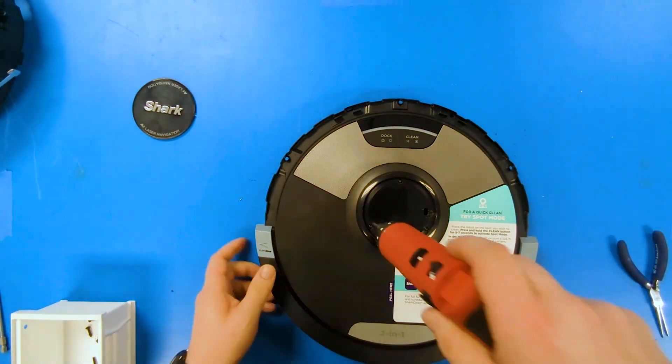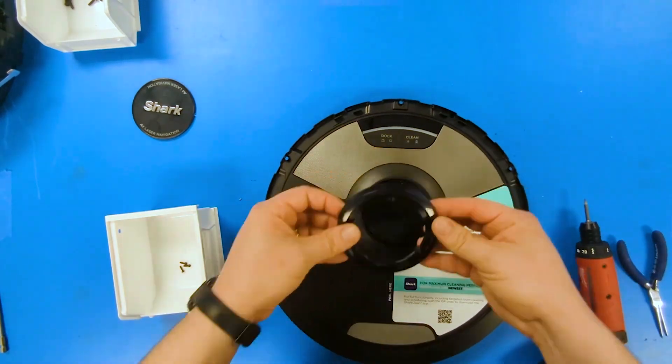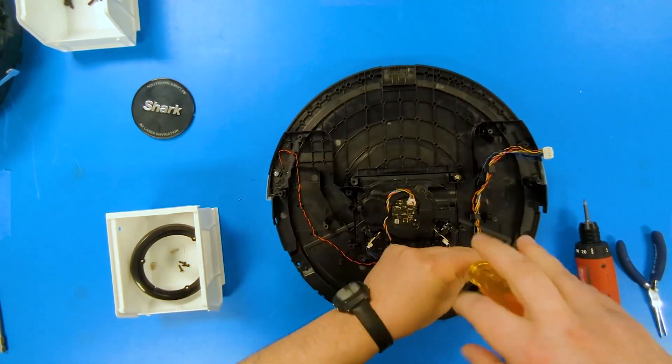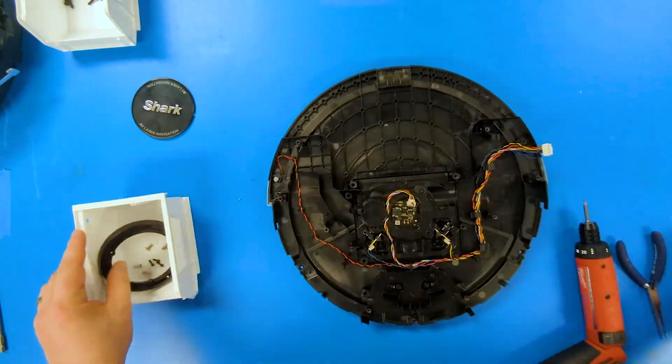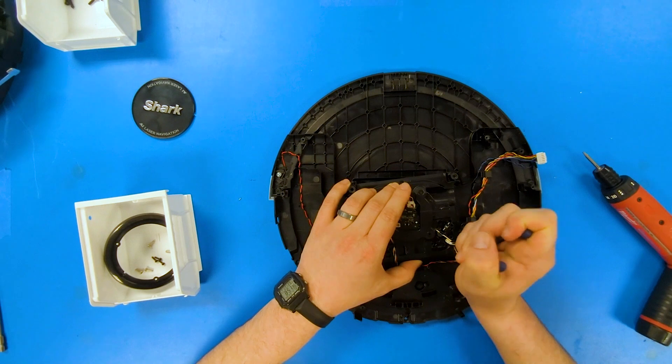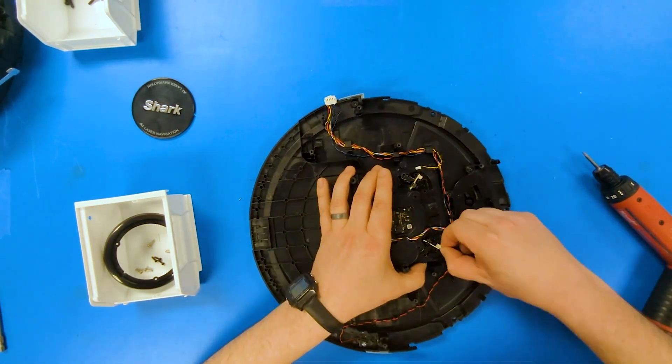The top sensor cover hides a few of the top screws for the lidar. A few more screws on the back side removes the lidar assembly from the top case. This is really the visual brains of the system that allows it to map your house while it's cleaning.